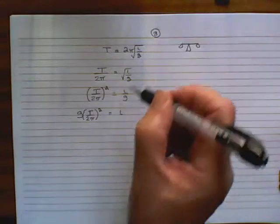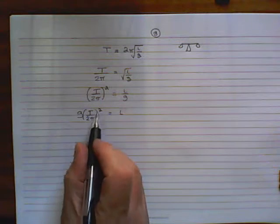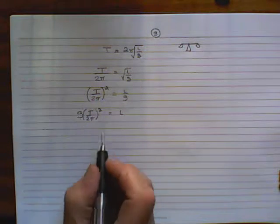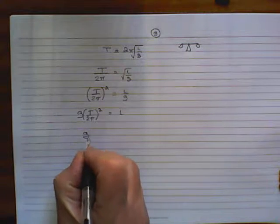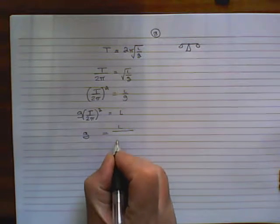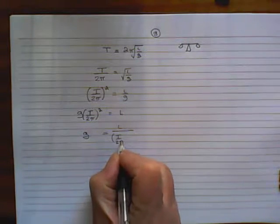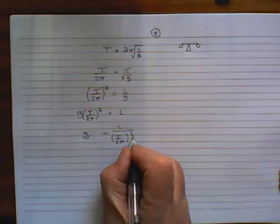So now, we could divide both sides by T over 2π, squared. That would give us G on its own. Okay, so G equals L divided by T over 2π, squared.